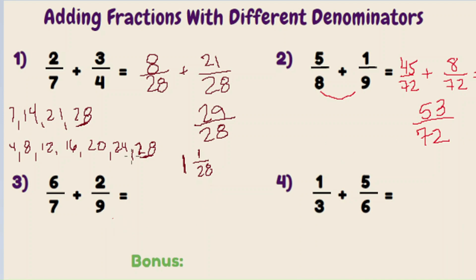All right, let's look at example three. Six-sevenths plus two-ninths. Again, we can list the multiples out, or we can just multiply these guys together. And seven times nine is sixty-three. So that becomes our new denominator. Seven goes into sixty-three a total of nine times. Seven times nine is sixty-three. Six times nine is fifty-four.